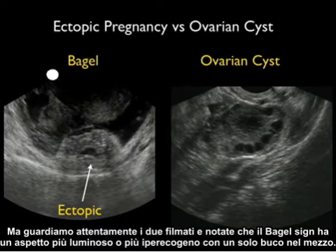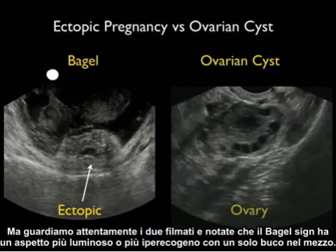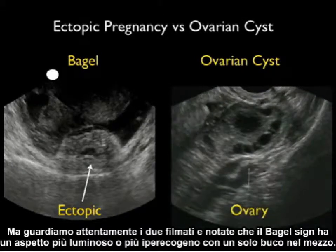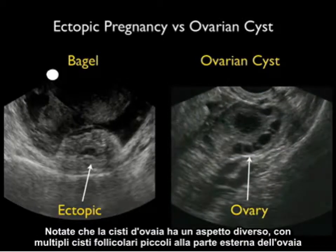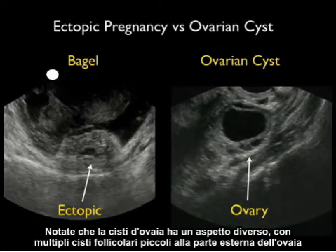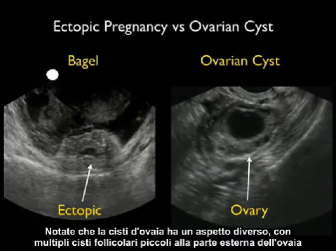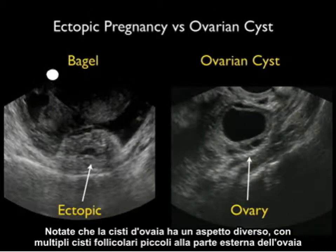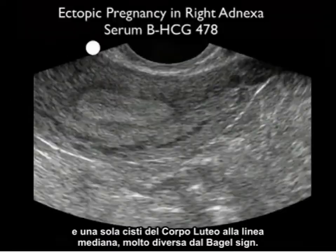Looking closer at the two video clips, notice that the bagel sign has a more hyperechoic or brighter appearance with a single hole in the middle. The ovarian cyst has a different appearance, with multiple small follicular cysts to the outer portion of the ovary and a single midline corpus luteum cyst — very different than the bagel sign.